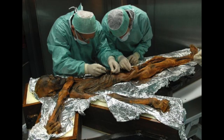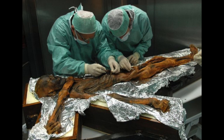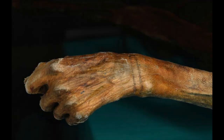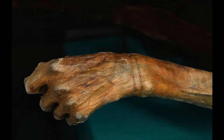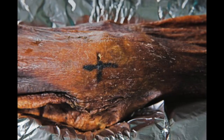Ötzi was so well preserved that his DNA has been tested, his stomach contents were analyzed, we found tattoos all over his body, we MRI scanned him to see that he had arthritis, and so much more. Other organisms become trapped in tree sap, which then crystallizes into amber.